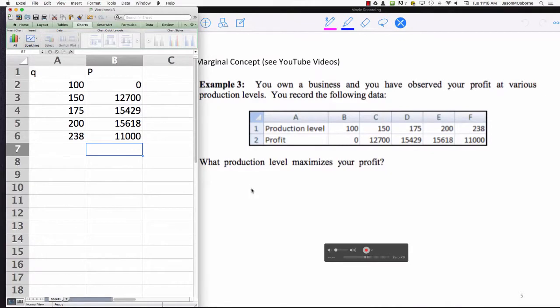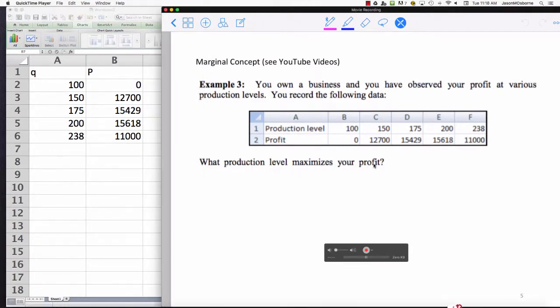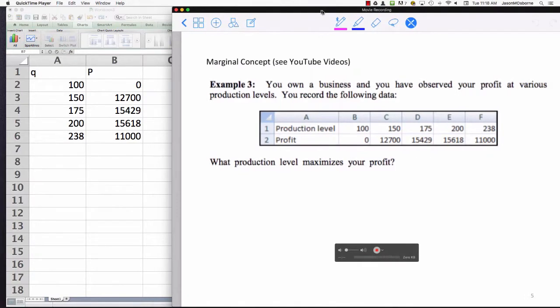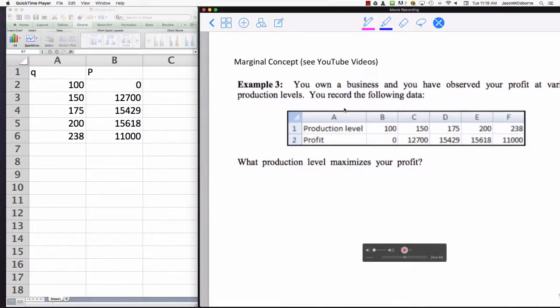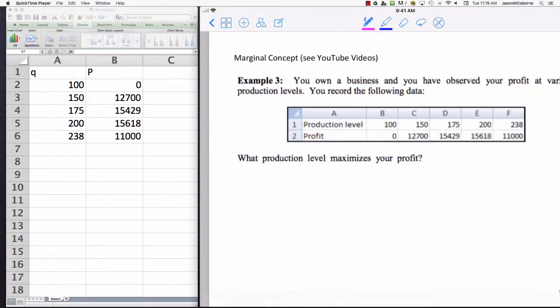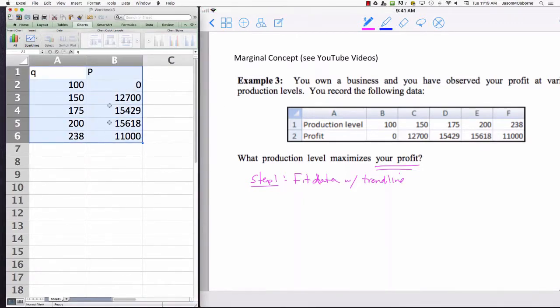The question that's being asked here is what production level maximizes your profit. We need to take a look at what's going on here. It might be a good idea to first, step one, fit this data - fit the profit data with a trend line, which is something that we have discussed this semester. So let's see if we can compute the trend line for this given data.